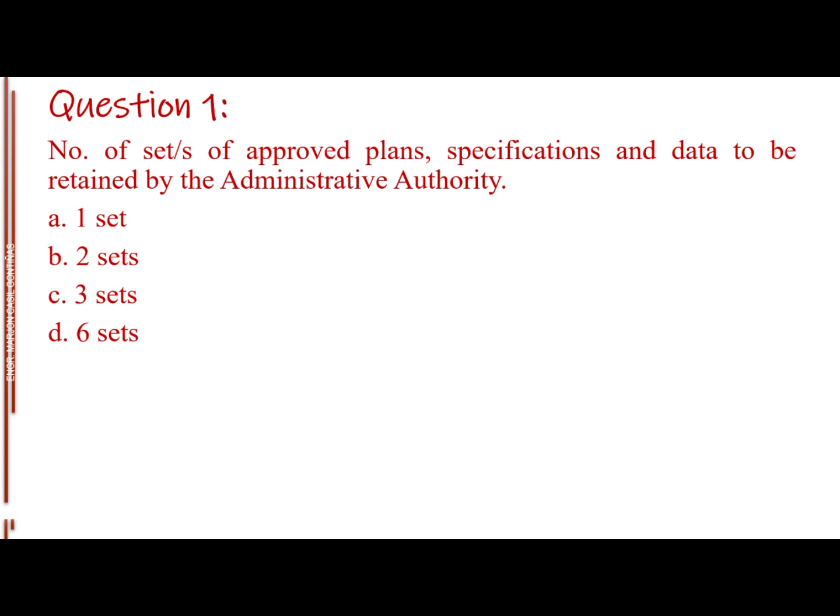Question number one. Number of set or sets of approved plans, specifications, and data to be retained by the administrative authority. Letter A, one set. Letter B, two sets. Letter C, three sets. Letter D, six sets. The answer is letter A, one set.